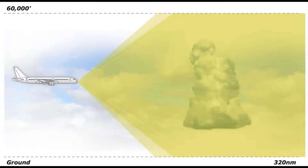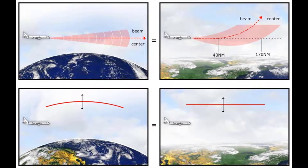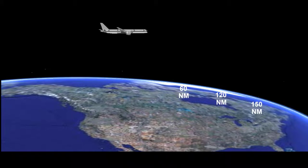The system automatically and continuously scans and collects weather and ground returns from the nose of the aircraft out to 320 nautical miles and from the ground to 60,000 feet. For scans above the freezing level, the system automatically increases gain to make less reflective frozen storm tops more visible. The scanned information is stored in the 3D volumetric buffer, continuously updated and compensated for aircraft movement. The data is also corrected for the Earth's curvature, so displayed altitudes are true MSL altitudes — a significant correction that can affect readings by thousands of feet at longer ranges.